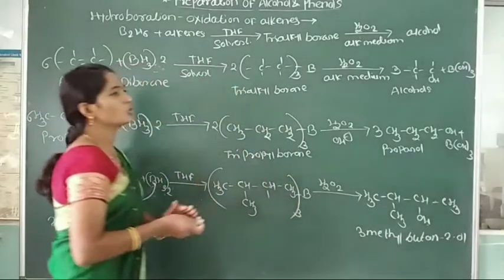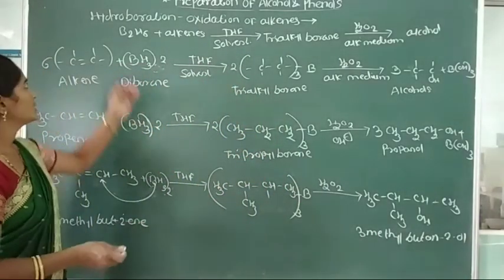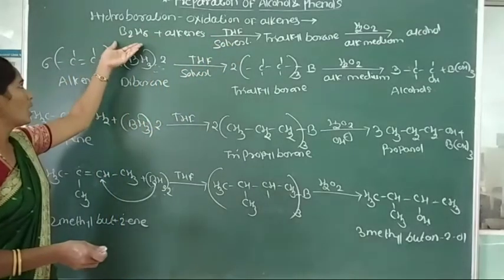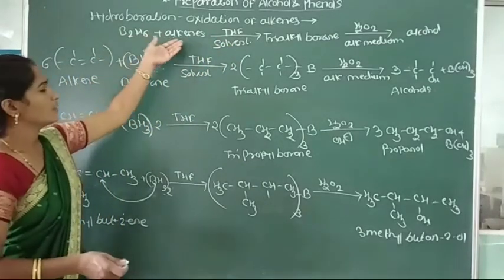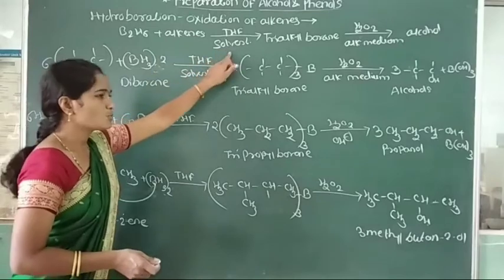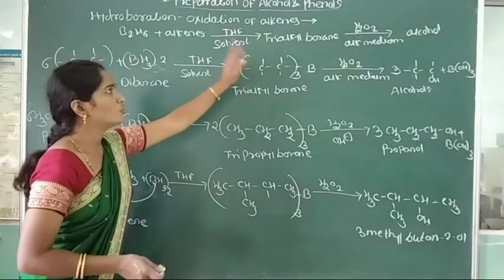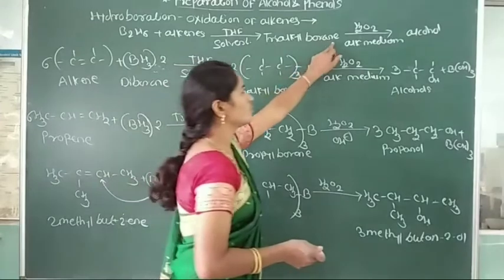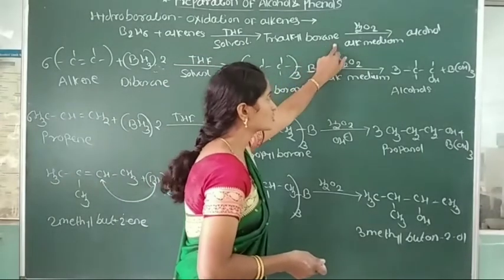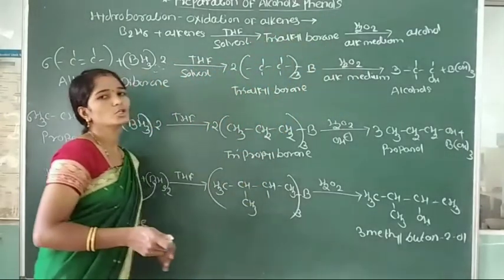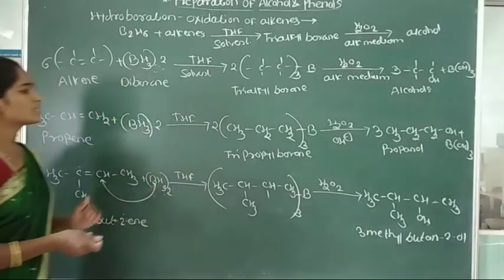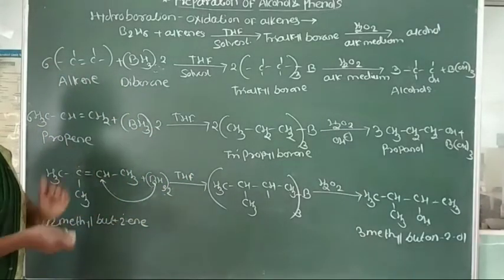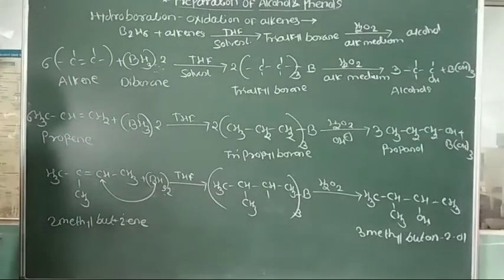This is the third method for preparation of alcohol, that is hydroboration-oxidation of alkenes. Diborane reacts with alkenes in presence of solvent to give trialkyl borane. This trialkyl borane is then oxidized with hydrogen peroxide to give the corresponding alcohols. First, write up this reaction in your notebook. Then we will see the next method for preparation of alcohols.